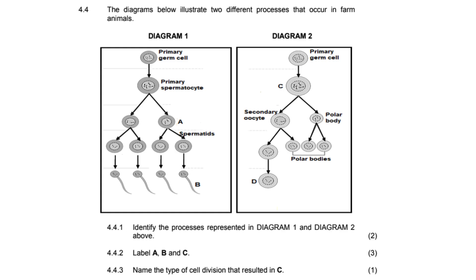C is on the other diagram. You are given a clue - below it is the secondary oocyte, so C above that is the primary oocyte. These are easy marks because the diagram gives you the clue: primary spermatocyte splits into two, giving you the secondary spermatocyte. Three marks, done. The type of cell division which resulted in C is mitosis, which occurs during the early stages of gamete formation.